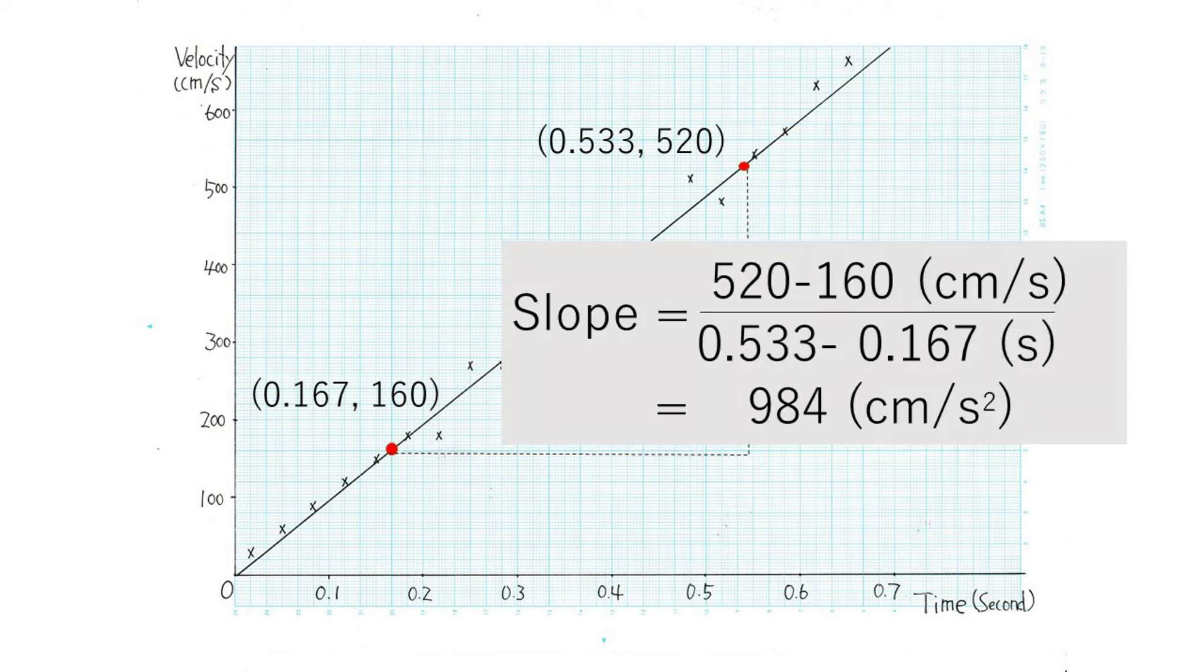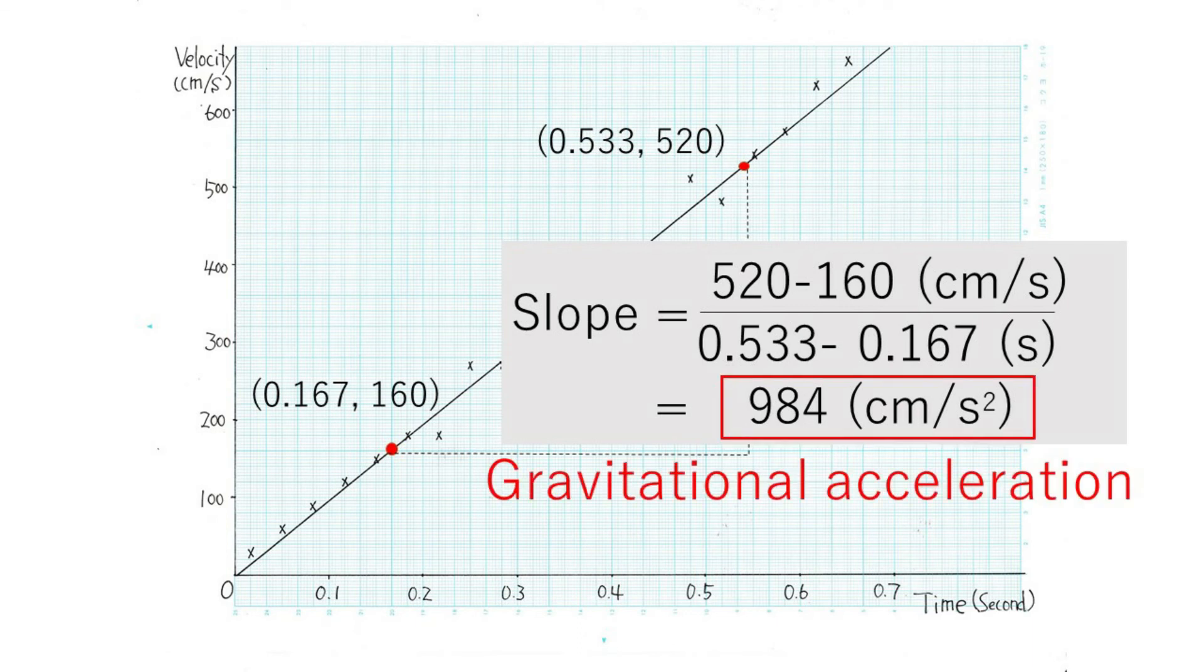Calculation result is 984 cm per square of second. This is the experimental result of gravitational acceleration.